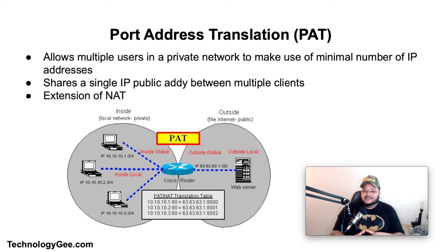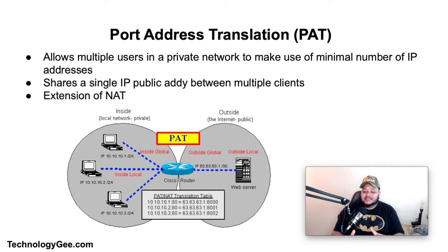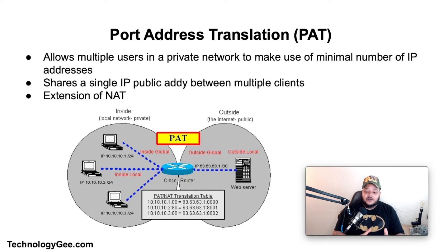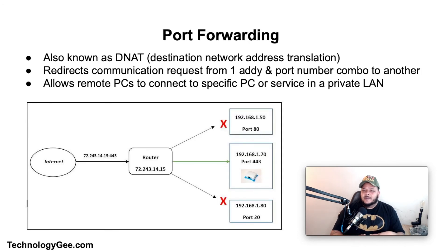Port Address Translation (PAT) is a function that allows multiple users within a private network to make use of a minimal number of IP addresses. Its basic function is to share a single public IP address among multiple clients who need internet access. PAT is an extension of NAT. An example is a home network connected to the internet — the router is assigned a discrete IP address, and multiple users can access the internet over the router, each assigned a port number as they do so.